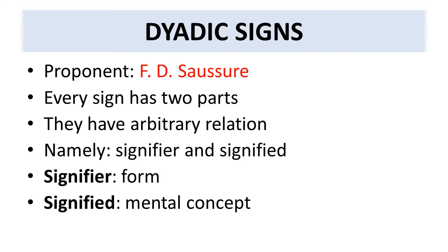The dyadic model of sign was given by Ferdinand de Saussure. According to him, every sign has two parts: the signifier and the signified. The signifier means the form — in the form of a word — and the signified is the mental concept it arouses. For example, we have the word 'tree' as the signifier and the mental image of the tree as the signified.